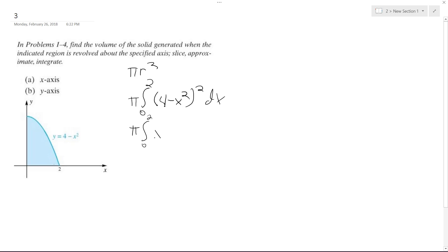So we're 0 to 2. This ends up being x to the fourth. I always put the largest portion first, minus 8x squared, and then plus 16. So x to the fifth over 5 minus 8 over 3 x cubed plus 16x from 0 to 2.